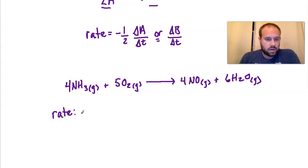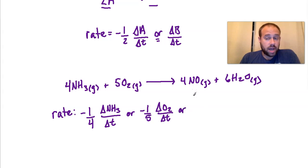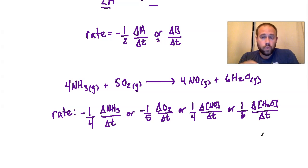Any reactant rate expression will be negative. For NH₃ with a coefficient of 4, it will be negative one-fourth times delta NH₃ over delta T. For O₂ with a coefficient of 5, it's negative one-fifth times delta O₂ over delta T. Switching to products — which are positive — for NO with a coefficient of 4, it's positive one-fourth times delta NO over delta T. And for H₂O with a coefficient of 6, it's one-sixth times the change in concentration of water over delta T.